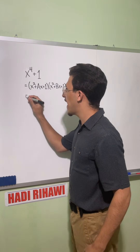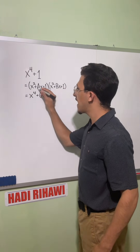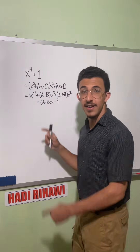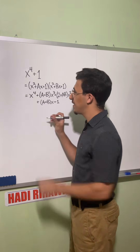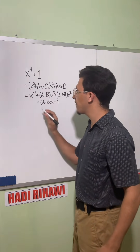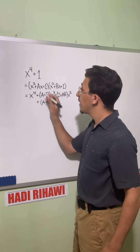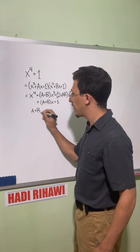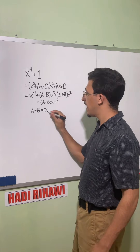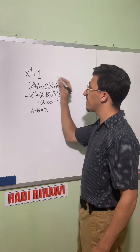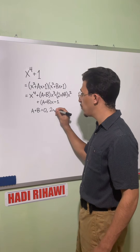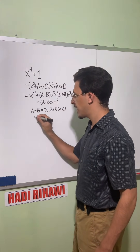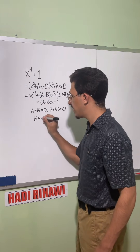Now let's multiply this out and we'll see what we have. We just match the coefficients from this side to this side. We see there's a one in front of the x to the fourth, and a one for the constant term. But here we have plus zero x cubed, so a plus b equals zero. And the x-squared term has a coefficient of zero, so we also have two plus ab equals zero. Then we can solve for b to get b equals negative a.